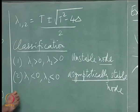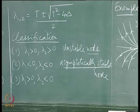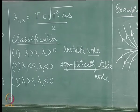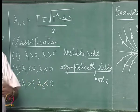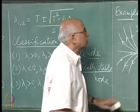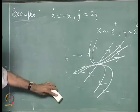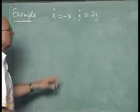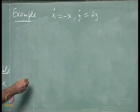The third possibility is one eigenvalue positive and the other negative. To study this, we look at a decoupled case: x-dot = -x and y-dot = +2y. Here x goes like e^(-t), flowing into the critical point, whereas y explodes outwards like e^(2t).